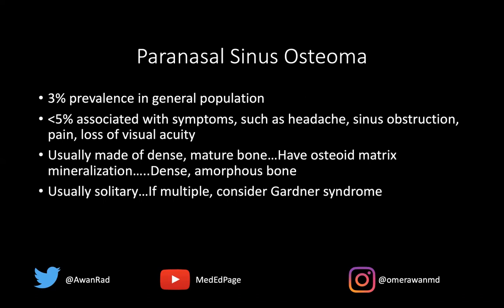These are usually solitary — you typically only have one. But if you start to see multiple osteomas, you want to start thinking of Gardner syndrome, which is associated with intestinal polyposis. Multiple colorectal polyps as well as multiple osteomas — you want to think of Gardner syndrome.